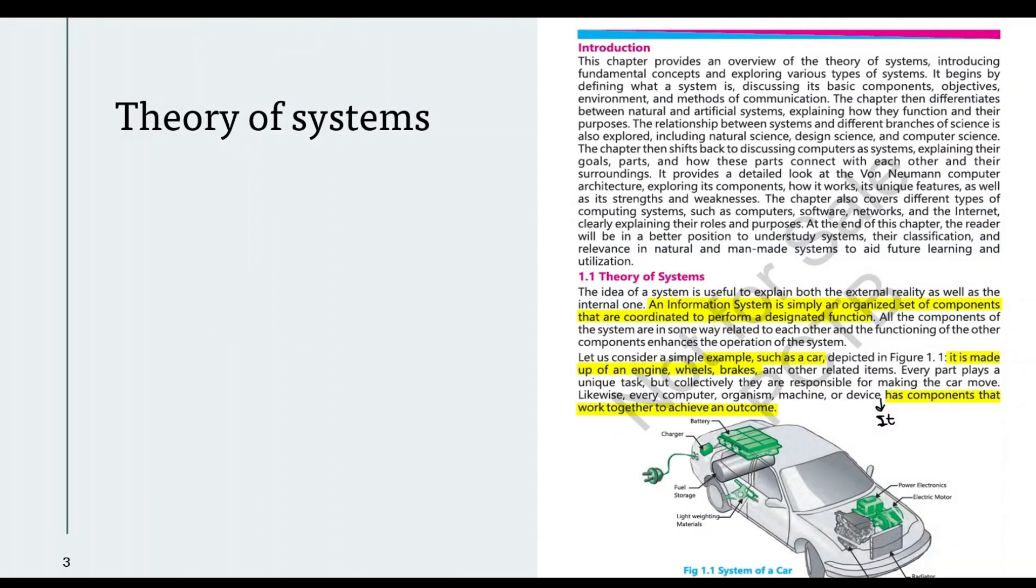Students, you must have heard many times about computer system, solar system, education system, but what is a system actually? System means a group of things that work together for a purpose. If we look at its definition: a system is an organized set of components that work together to achieve a common goal.